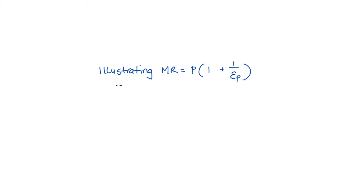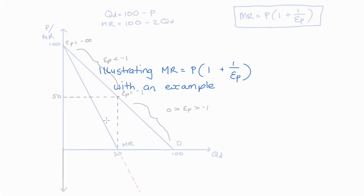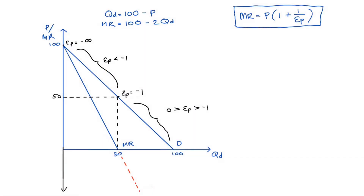Hi everyone. In this video I'm going to illustrate the use of this equation — marginal revenue is equal to the price multiplied by 1 plus 1 divided by the elasticity of demand — with an example. My example is going to focus around this demand equation, so quantity demanded is equal to 100 minus the price.